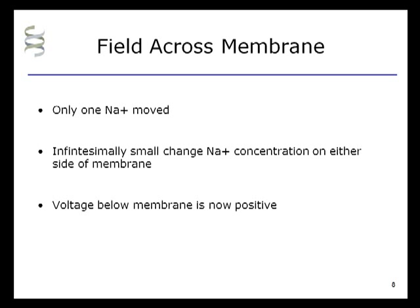Yet the voltage inside the membrane is now positive. This is a rule of thumb: it takes the movement of only a small number of ions across the membrane to change the voltage. But to change the concentration gradient, it would require the movement of huge numbers of ions.